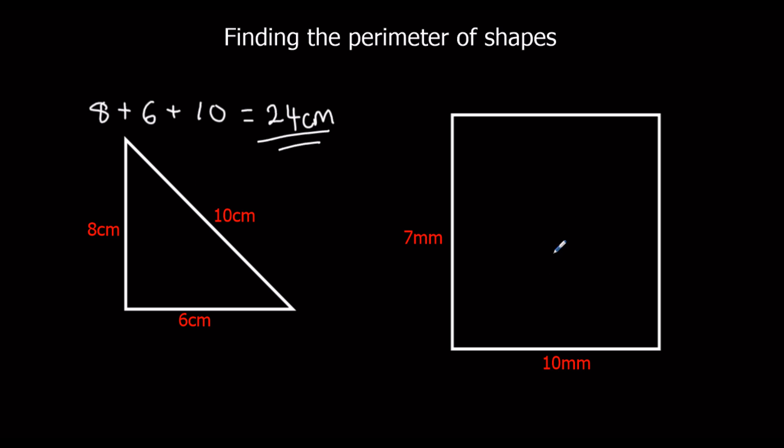Here we've got a rectangle, and you can see there's only two lengths with the length marked on them. So we've got 7 millimeters on this side, but because it's a rectangle, we know that the other side is also 7 millimeters. And we've got 10 millimeters here, so we know the other side at the top is also 10 millimeters.